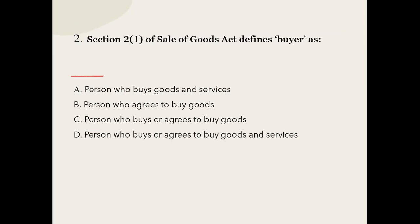Q2: Section 2, subsection 1 of Sale of Goods Act defines 'buyer' as. The options are: the person who buys goods and services; the person who agrees to buy goods; and the person who agrees to buy goods and services.